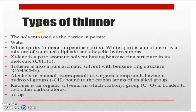Next, we have types of thinners. Solvents used as carriers in paints include water, white spirits, and mineral turpentine spirits. White spirit is a mixture of saturated aliphatic and alicyclic hydrocarbons. Other thinners include xylene — a pure aromatic solvent with a benzene ring structure and molecular formula C8H10 — and toluene, also a pure aromatic solvent with molecular formula C6H5CH3.